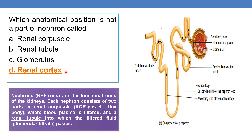Renal cortex is the anatomical position that is not a part of the nephron. The renal corpuscle is where blood plasma is filtered, and the renal tubule is where the filtered fluid — the glomerular filtrate — passes. So the nephron is made up of the renal corpuscle and renal tubule.